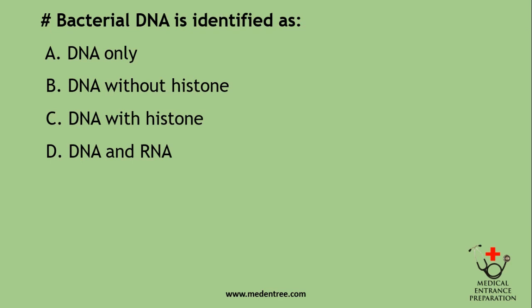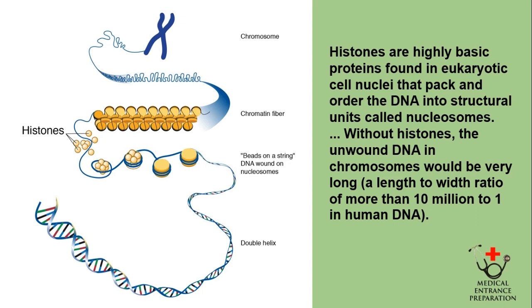Bacterial DNA is identified as: DNA only, DNA without histone, DNA with histone, or DNA and RNA? The basic difference between bacterial DNA and eukaryotic DNA is that bacteria have no histone proteins. In eukaryotic cell nuclei, histone proteins pack and order the DNA into structural units called nucleosomes. Without histones, the unwound DNA in chromosomes would be very long — a length-to-width ratio of more than 10 million to 1 in human DNA.